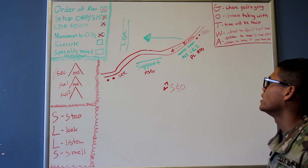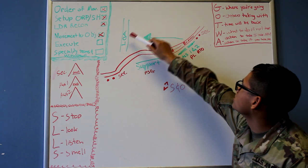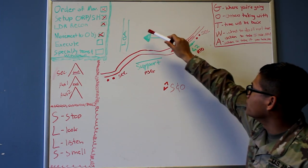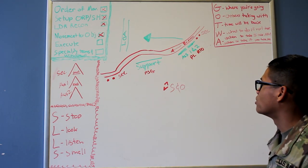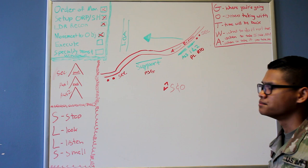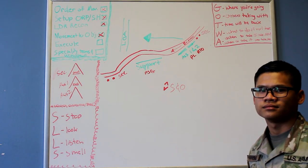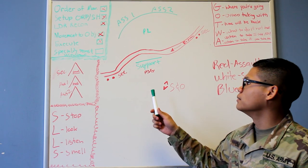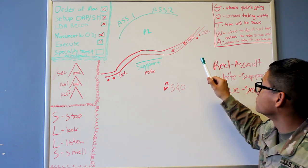Once he reaches that limit of advance, they're going to call for a 360 security perimeter. The PL will be with that assaulting element, and the PSG will stay with the support at all times while the support pulls to rear.